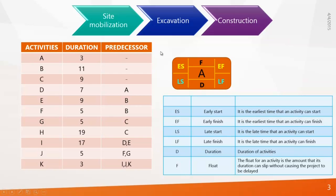Before the launch of project management software, planners used to draw large network diagrams describing the early start, late start, early finish, and late finish of every single activity. The description of ES, EF, LS, and LF is given in this table, and this is how they represent an activity.